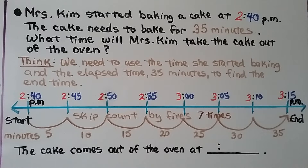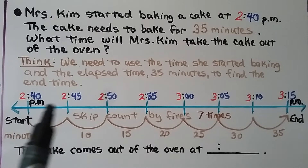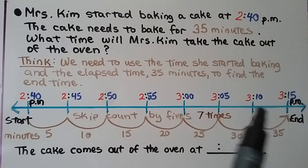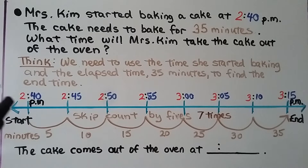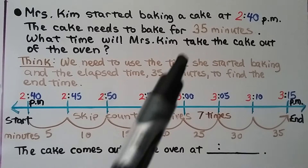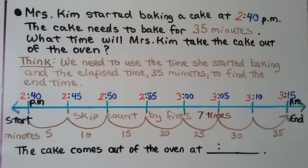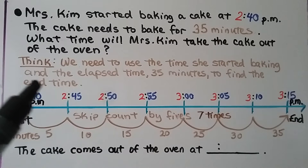Mrs. Kim started baking a cake at 2:40 p.m. The cake needs to bake for 35 minutes. What time will Mrs. Kim take the cake out of the oven? We need to use the start time of 2:40 p.m. and the elapsed time of 35 minutes to find the end time. We have our timeline with 5 minutes between each tick mark. Starting at 2:40 p.m., we skip count by 5's — 2:40, 2:45.